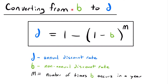Next, we're going to look at how to convert from B to D, where B is a non-annual discount rate and D is an annual discount rate. This is very similar to converting between I and J, except now we're working with discount rates. The formula is: D = 1 − (1 − B)^M, where M is the number of times that B occurs in a year. If B were a semi-annual discount rate, then M = 2.